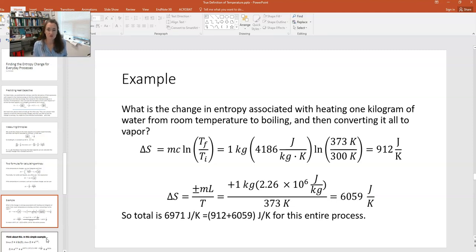So we have one kilogram of water. The specific heat of water is 4,186 joules per kilogram per kelvin. And then the natural log of T final over T initial, well, it would be the temperature of boiling, which is about 373 kelvin at atmospheric pressure, and then divided by room temperature, which is roughly 300 kelvin. That's how I estimated it here. And so that would give me 912 joules per kelvin for the entropy change for heating that water up.